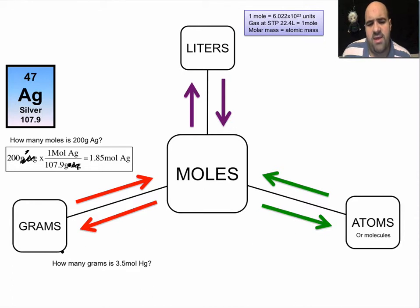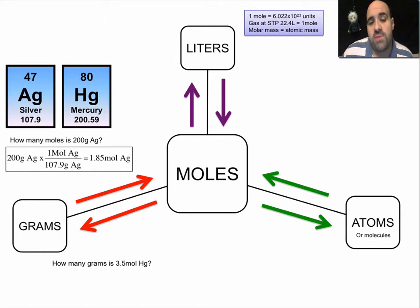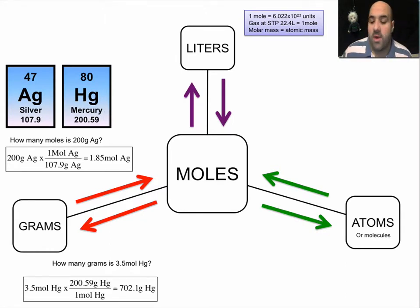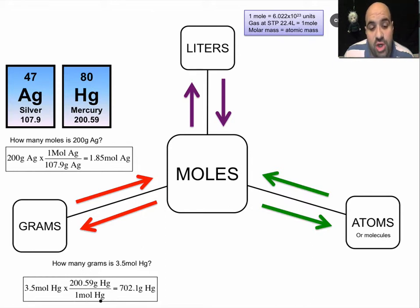How many grams is 3.5 moles of mercury? We're going from moles to grams, so we start with 3.5 moles of Hg times a blank fraction. If moles of Hg is here, moles goes down here and grams go up top. Mercury is 200.59 grams per mole — same process. 3.5 moles of Hg times 200.59 grams per one mole. That's the conversion factor. Multiply across, divide by one. 3.5 moles of mercury is 702.1 grams.